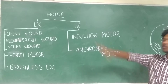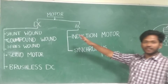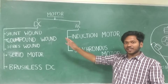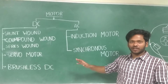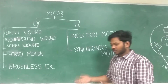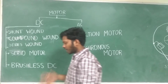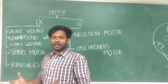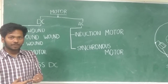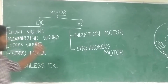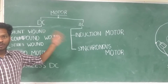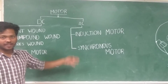As you can see, motors are initially divided into 2: DC and AC. DC stands for direct current and AC stands for alternating current. The selection of motor depends upon the type of energy supplied to it. If we are having a DC supply, we should choose a DC motor, and if it's an AC supply, we should go with an AC motor.